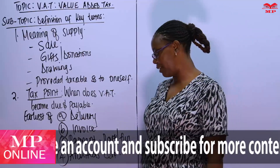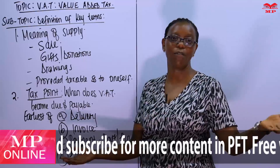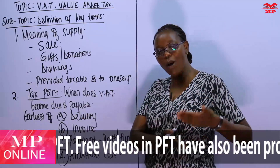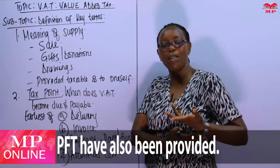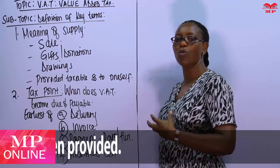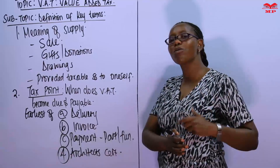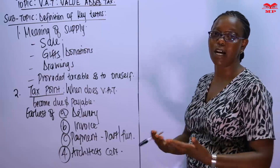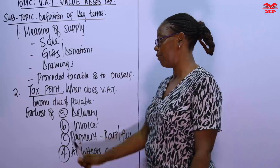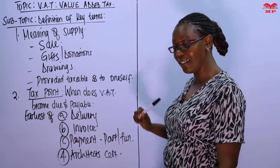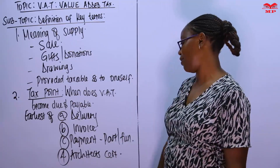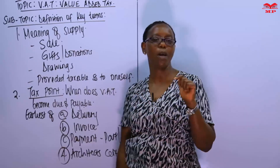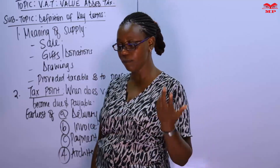For a construction contract spanning three or more years, the value of work certified must be done by a professional — a surveyor, architect, or authorized supervisor — who issues a document proving work has been done. This is the architect's certificate. You compare the dates of delivery, invoice, part or full payment, and the architect's certificate, and whichever comes first determines the tax period in which that transaction is accounted for VAT purposes.